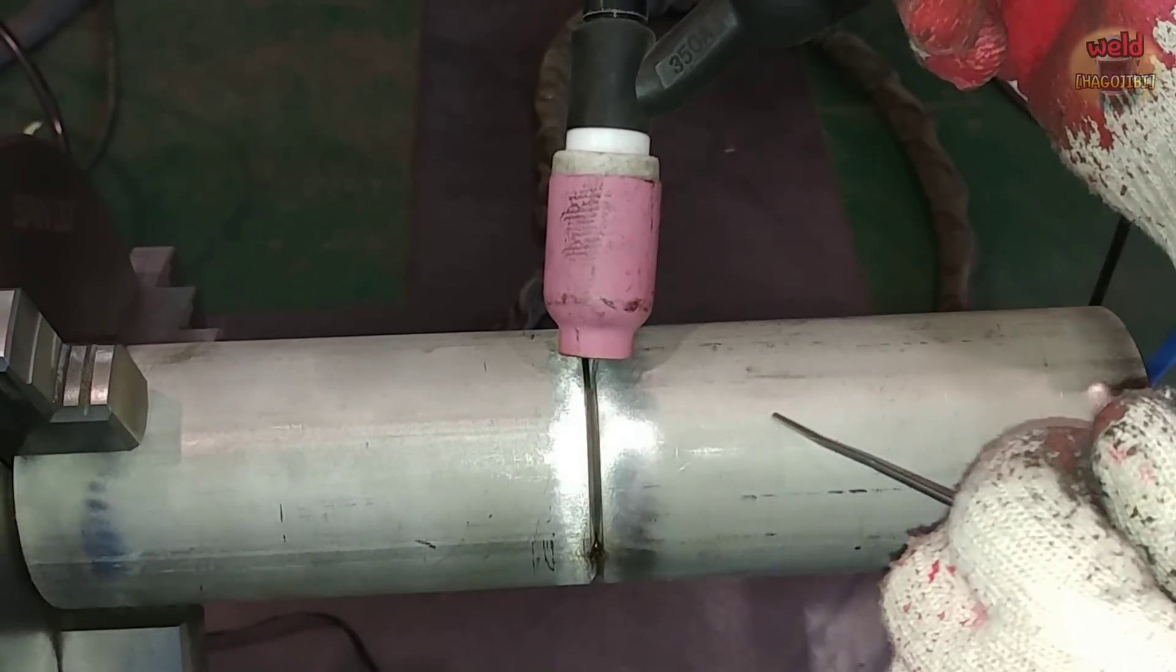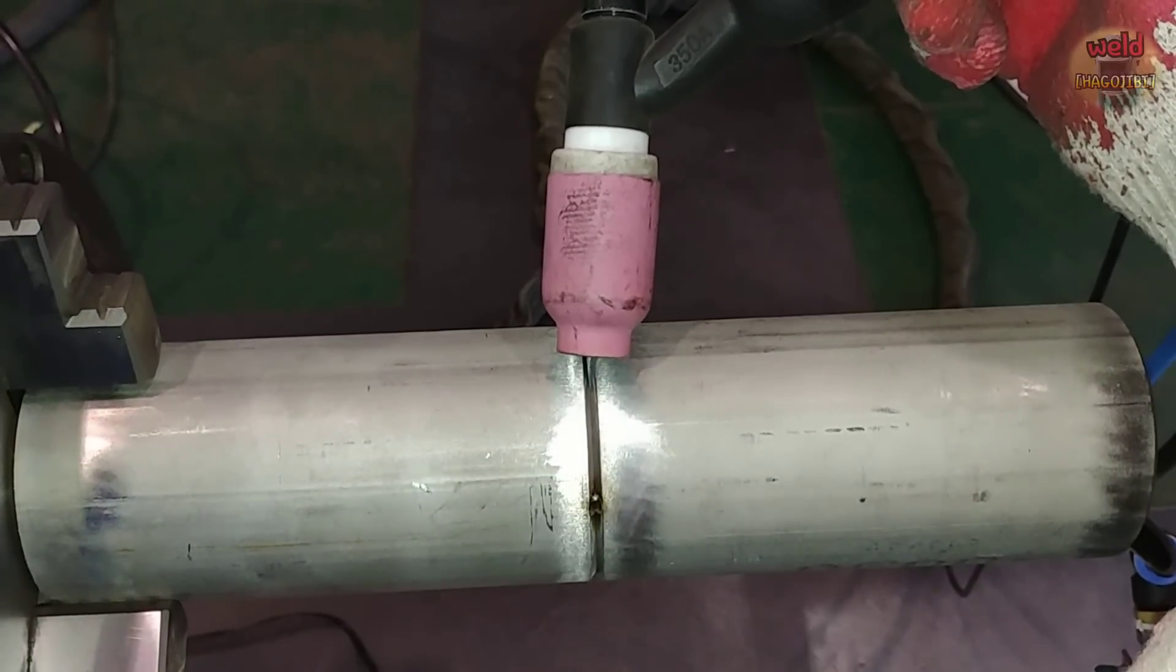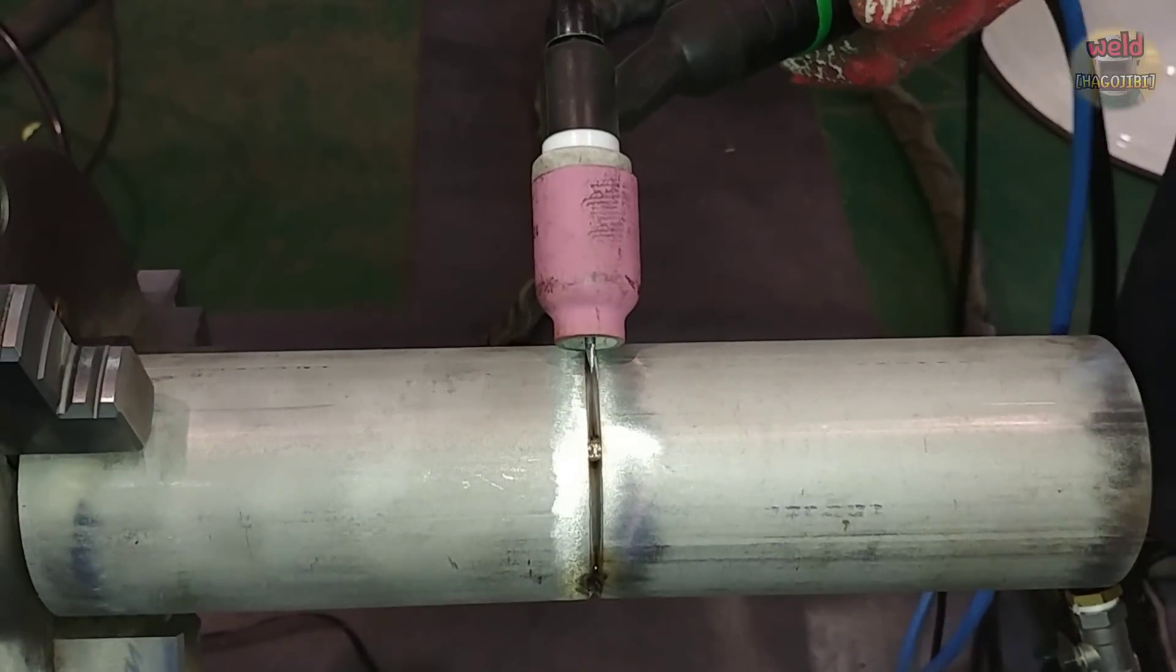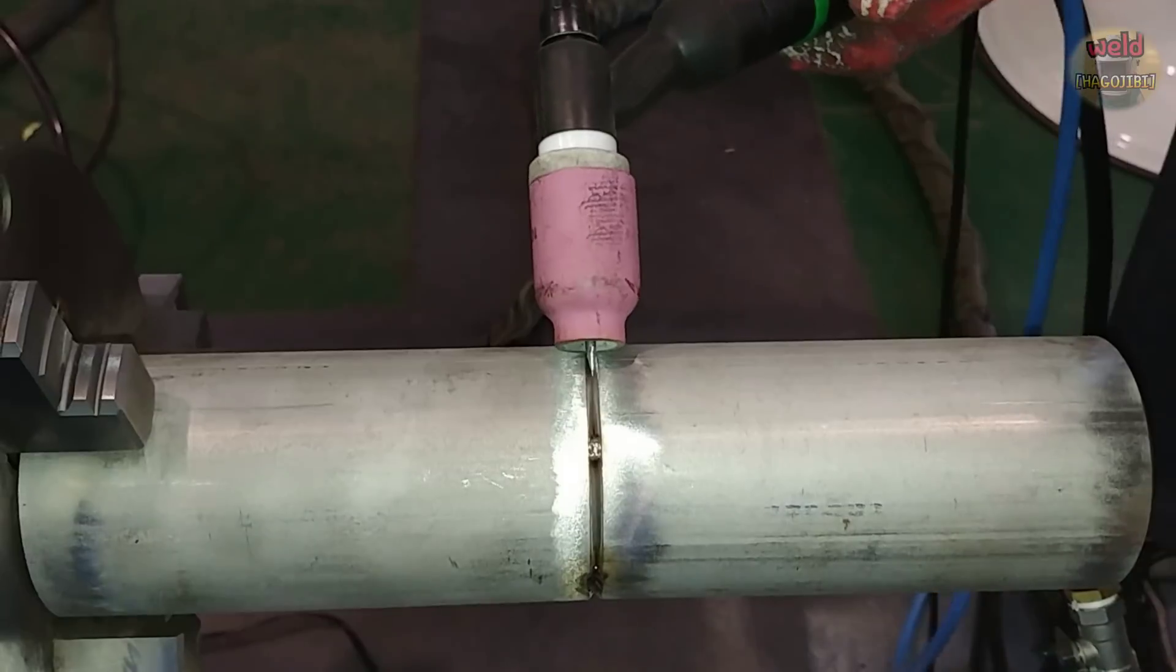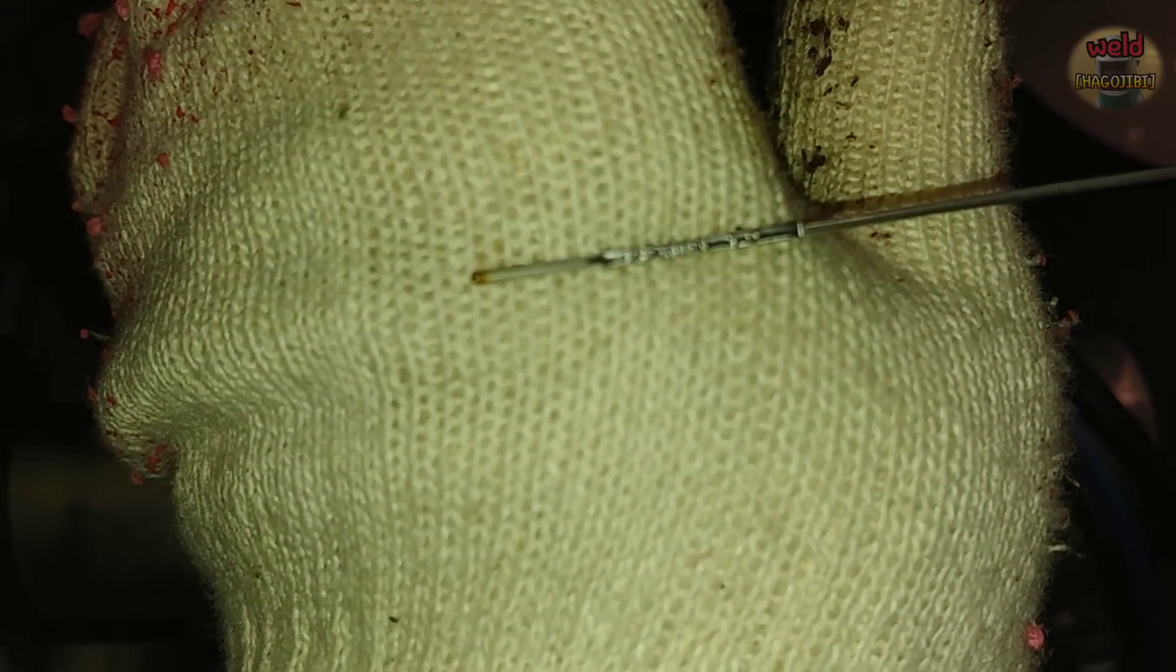And there are also a way to weld a torch while shaking. I'm going to make this video in the next video. Today I'm going to use the walking the cup technique to weld while shaking the nozzle.